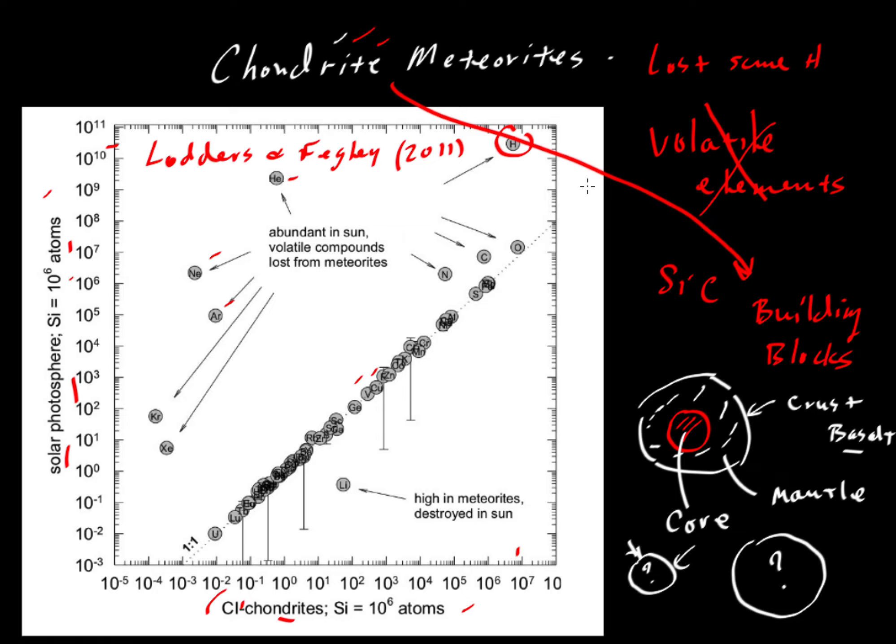Well, we think chondrite meteorites are the answer. And this wonderful diagram from Katerina Lauders and Bruce Fegley in their textbook tells us why. We get that idea in part from the fact that chondrite meteorites look like the sun, and the sun is really the bulk of the mass of the solar system. We would expect that on the whole the planets should look a lot like the sun, at least in their non-volatile fractions.